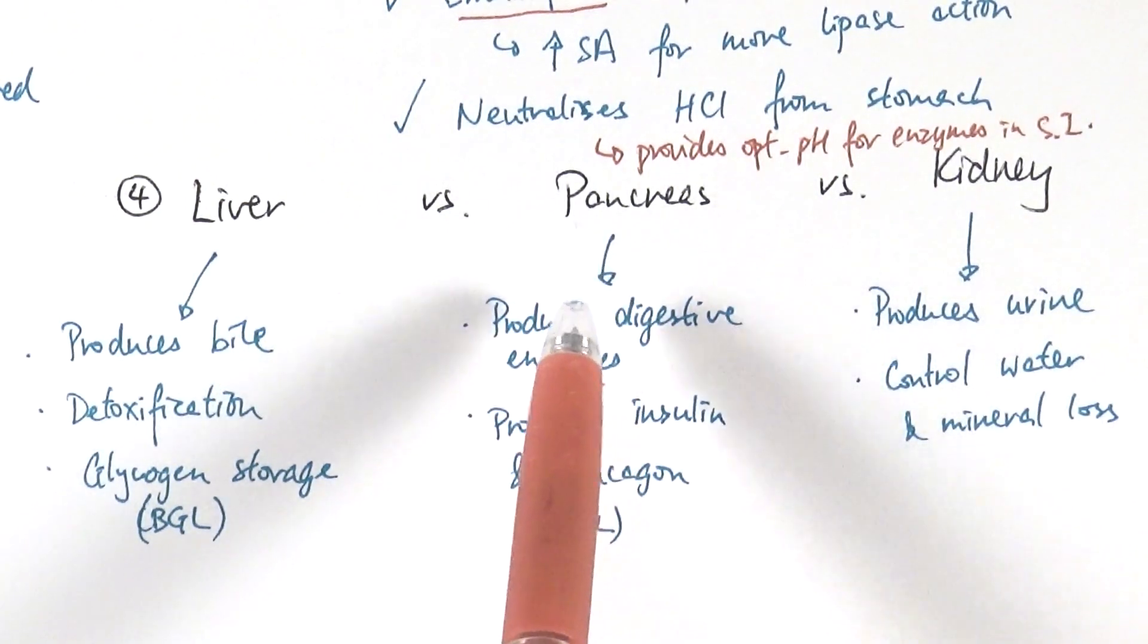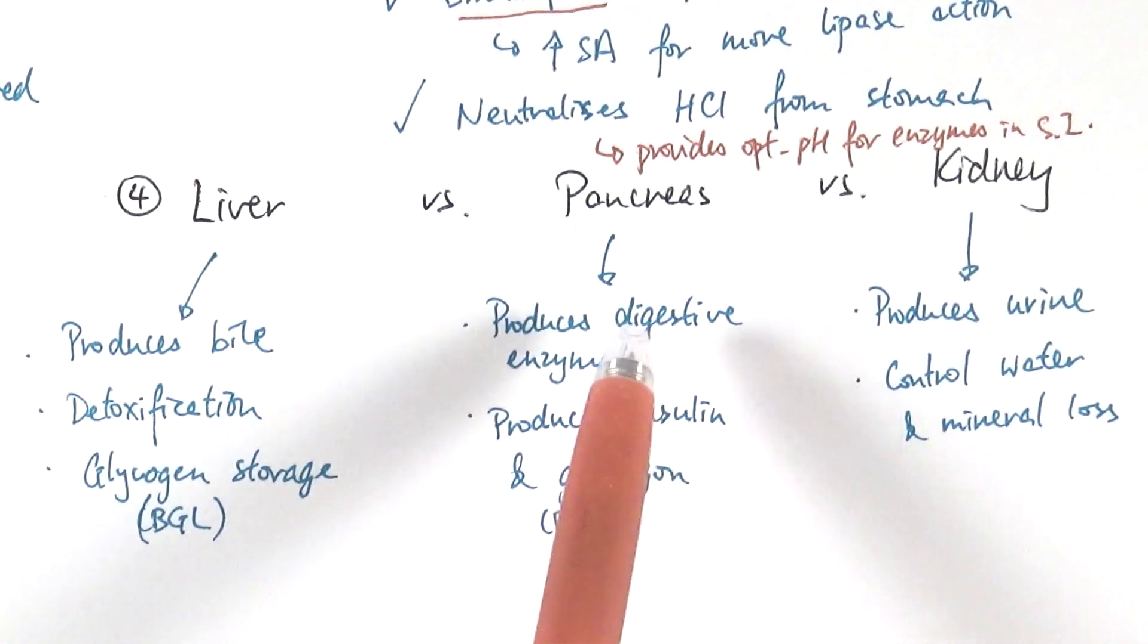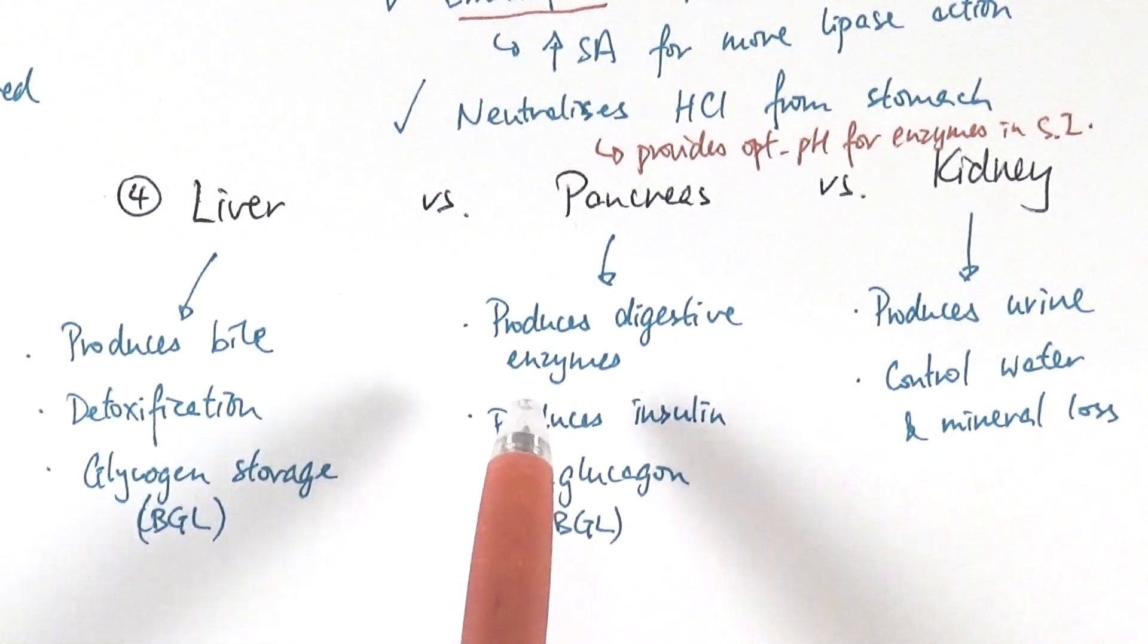Pancreas, in that sense, in terms of digestion, yes, it is involved in it as well. And they make all sorts of digestive enzymes. So for example, pancreatic amylase, which breaks down starch in the small intestine to simple sugars,